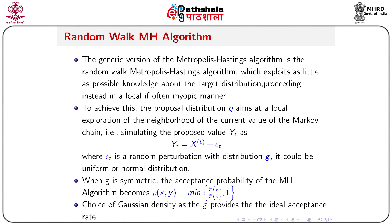The generic version of the Metropolis-Hastings algorithm is the Random Walk Metropolis-Hastings algorithm, which exploits as little as possible knowledge about the target distribution, proceeding in a local, often myopic manner. To achieve this, the proposal distribution q aims at local exploration of the neighborhood of the current value by simulating a proposed value yt = xt + epsilon_t, where epsilon_t is random noise with distribution g — which could be uniform or normal. When g is symmetric, the acceptance probability becomes rho(x,y) = min(pi(y)/pi(x), 1), and choosing a Gaussian density for g provides an ideal acceptance rate.